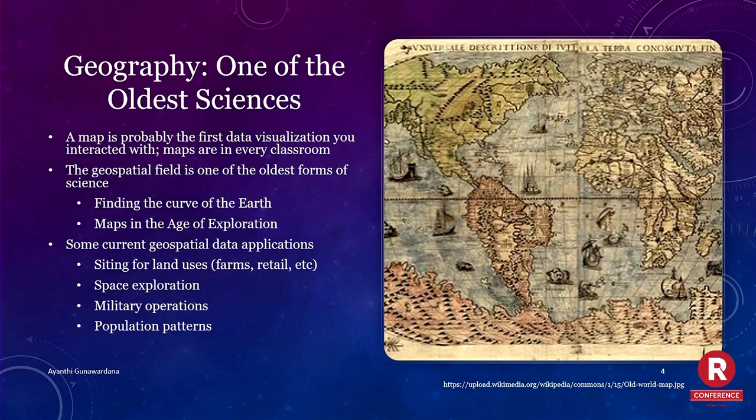Geography is one of the oldest sciences. A map is probably the first data visualization you ever saw or interacted with. They're in childhood puzzles, they're in probably every classroom in America, there's one in your pocket if you have Google Maps, they're in tons of TV shows — Dora the Explorer, anyone? Geospatial is one of the oldest forms of science.